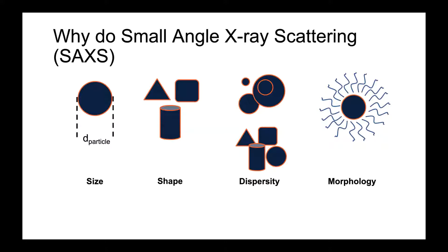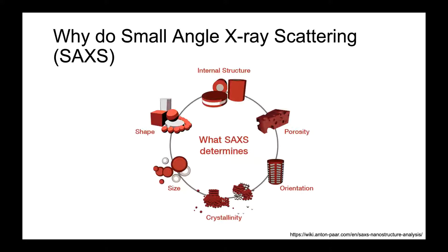Here we have an example of a patchy particle which has ligands attached to a core. Using SAXS, you can scatter off the ligands and the core, then fit that data to get the average size of these ligands, the core shell, and possibly how they're interacting with each other. SAXS can also determine porosity, average pore size, orientation of your sample, and crystallinity.